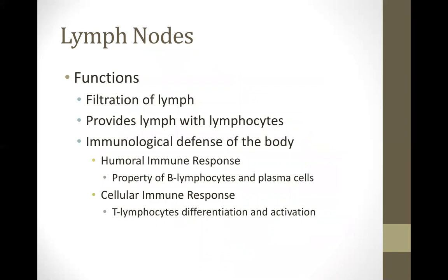For example, if you have a wound infection in your right leg, you will also experience inguinal pain — a palpable tender mass near the groin. This is your body's immunological defense responding to infection. The lymph node has two types of immune response: humoral immune response, which is the property of B lymphocytes and plasma cells that produce antibodies, and cellular immune response, which involves T lymphocyte differentiation and activation.